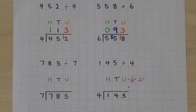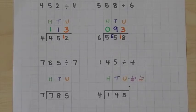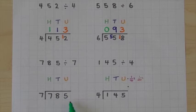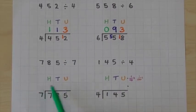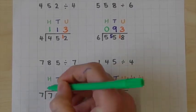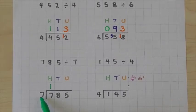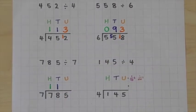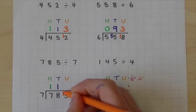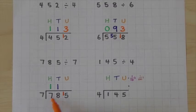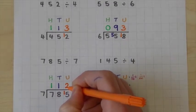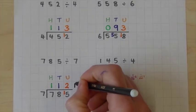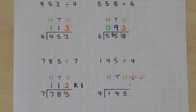Looking at the next example, things get a little bit more challenging. Once again, starting in exactly the same way — putting our dividend inside our division bar and divisor outside. Starting on the left hand side: 7 goes into 7 one time exactly. 7 goes into 8 one time with a remainder of one. We regroup that remainder and put it with our units. 7 goes into 15 two times with a remainder of one, and we write that next to our answer: remainder one.